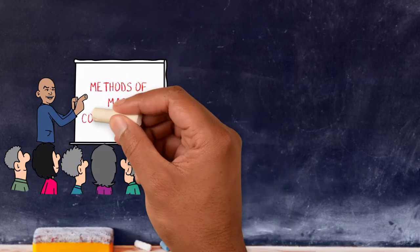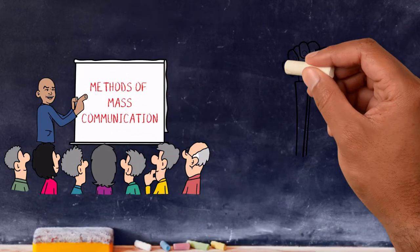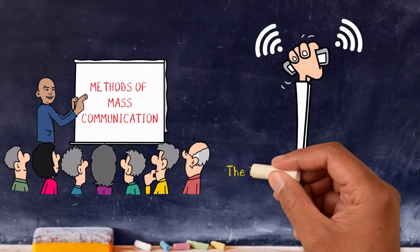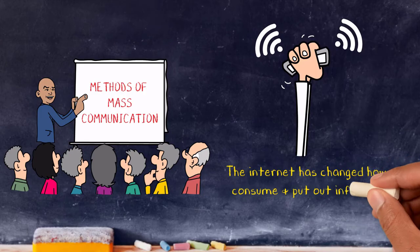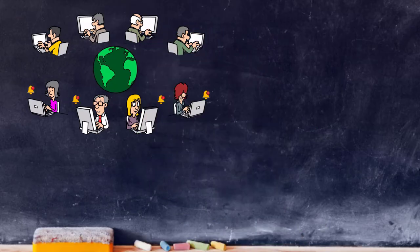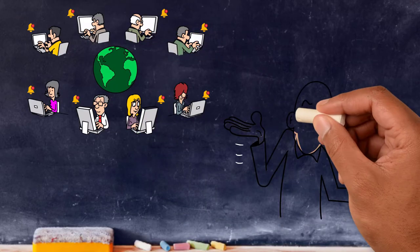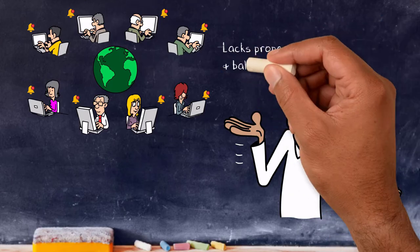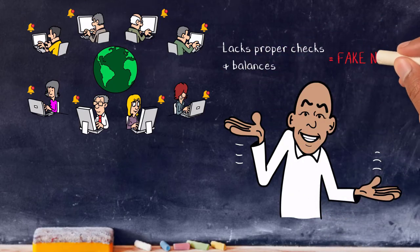Let's look at the methods of mass communication. We are living through a digital revolution and the internet has forever changed how we consume and put out information. It means that one single fact can be around the world in just a few seconds. What it can lack is proper checks and balances and has without a doubt given rise to fake news.